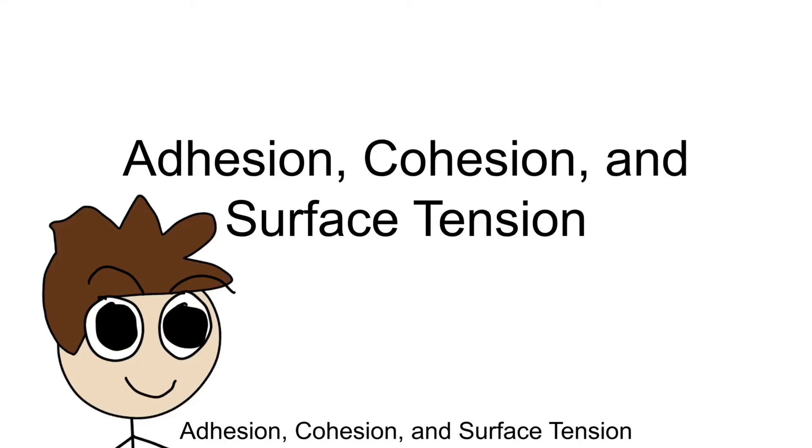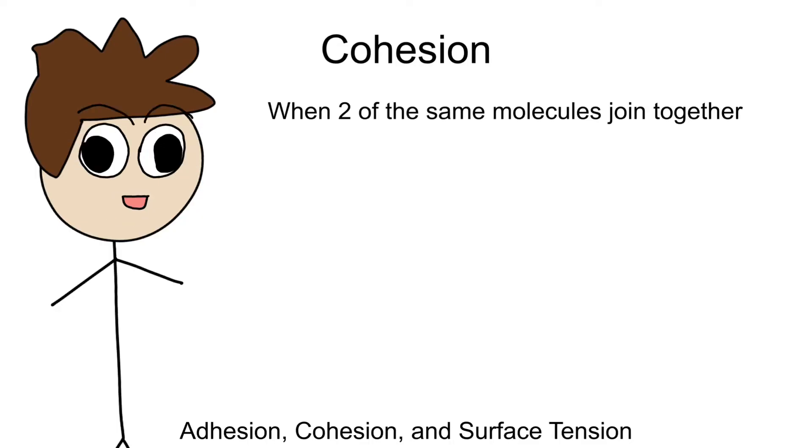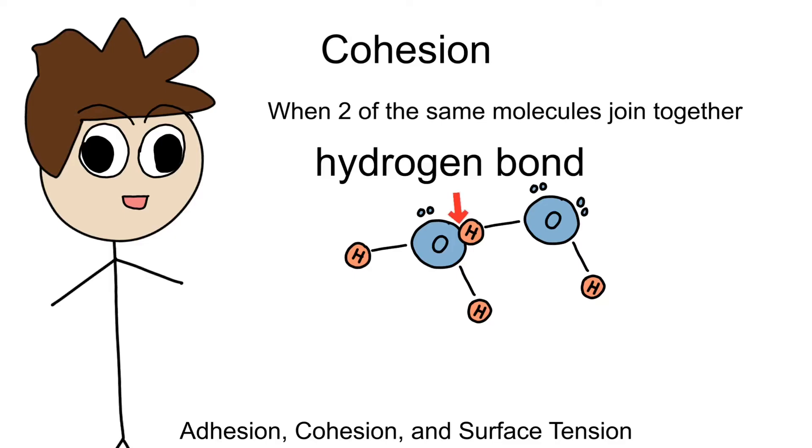Let's start off with a few terminologies that you should know. First is cohesion. Cohesion is what happens when two of the same molecules join together. In this case, we're talking about water molecules. When two water molecules connect, this is referred to as cohesion, and this has everything to do with hydrogen bonds between water molecules.